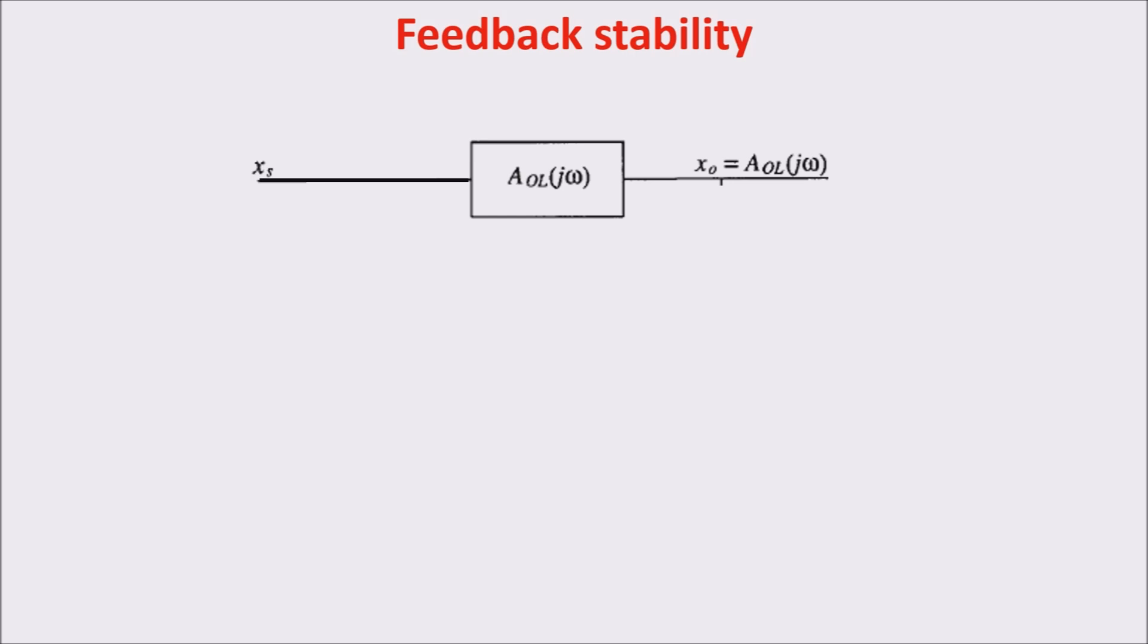Let's see this example once again. The input signal Xs is amplified by the amplification stage AOL, and we get the amplified output Xo. If we add a feedback, we see that the output is subtracted from the input Xs, and now the amplified signal is Xi less than Xs. So, the output is now this, which is of course less than the output without feedback.